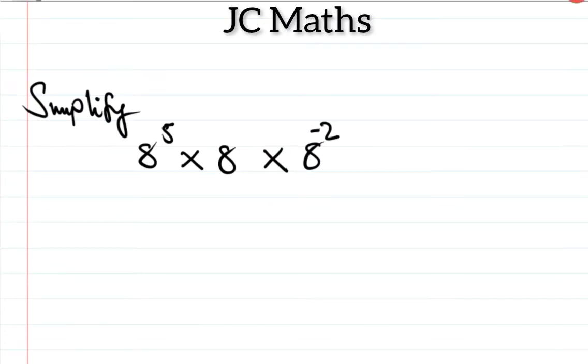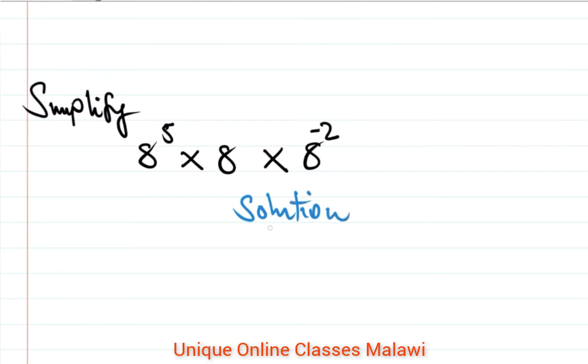Okay, this is just a matter of playing with the laws of indices. For this solution, we have 8 to the power 5 times 8, and this 8 is the same as 8 to the power 1.